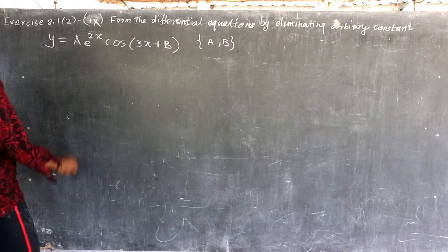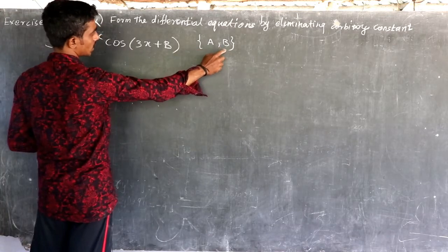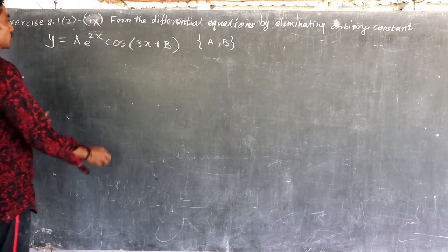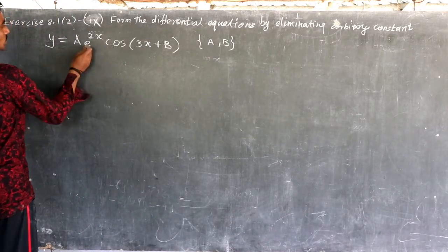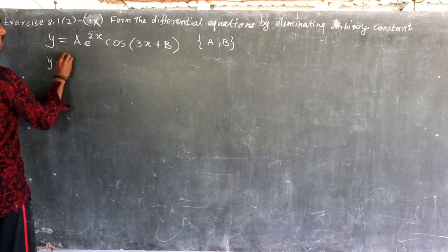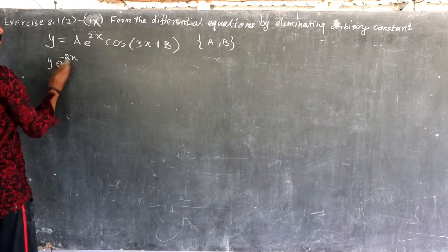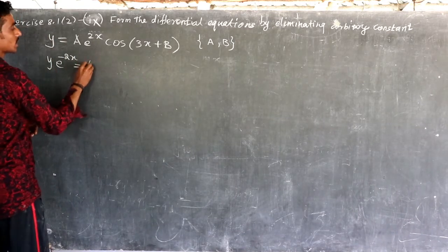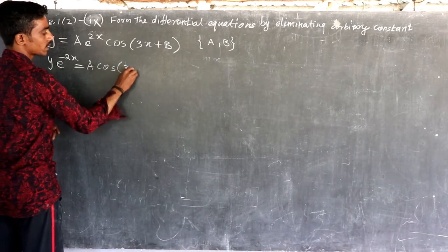There are two arbitrary constants, so we differentiate two times. Multiply through by e^(2x) and e^(-2x). The remaining part of e^(2x): a in terms of cos(3x) plus b.